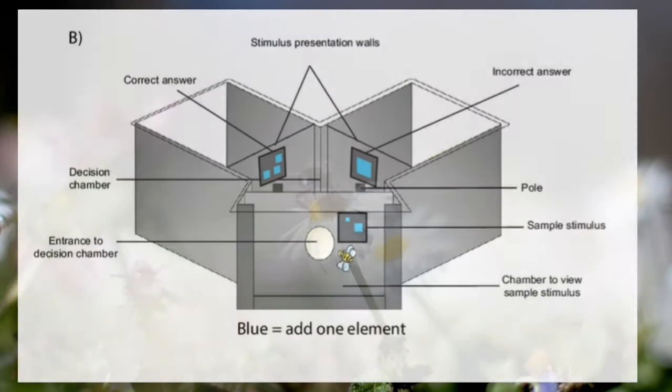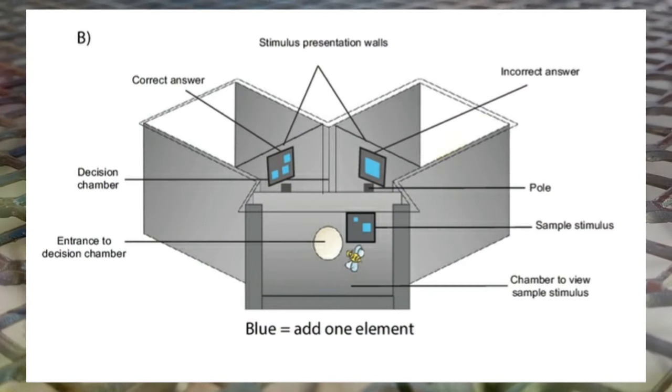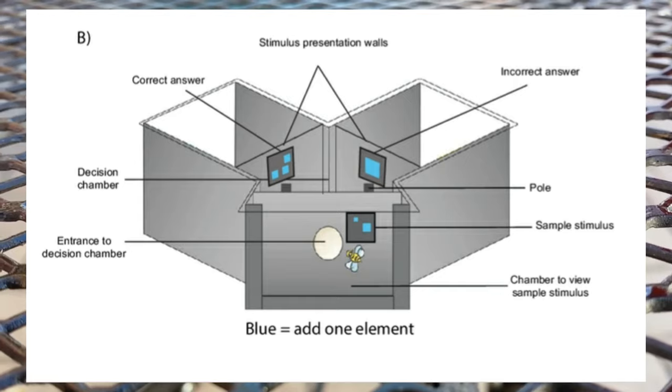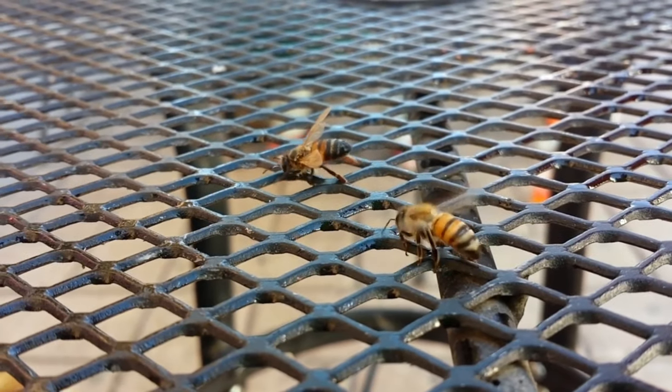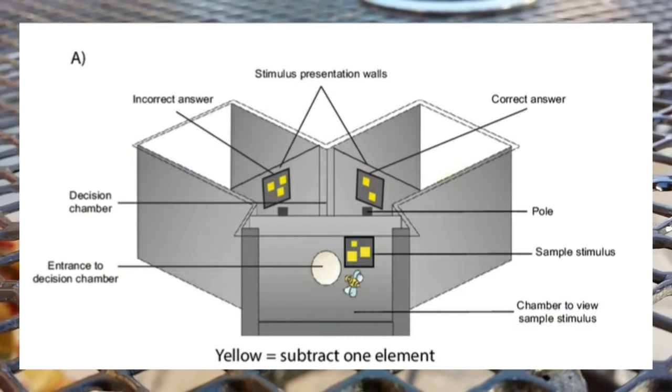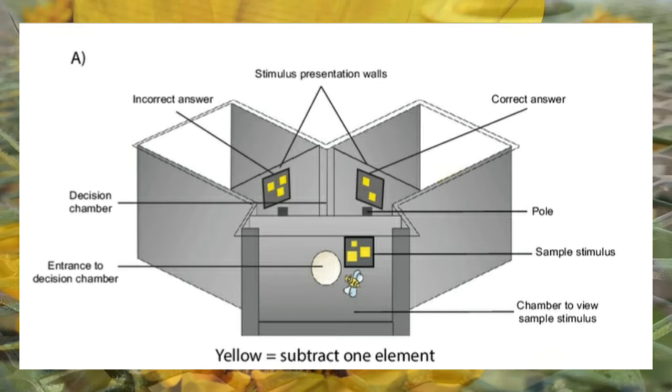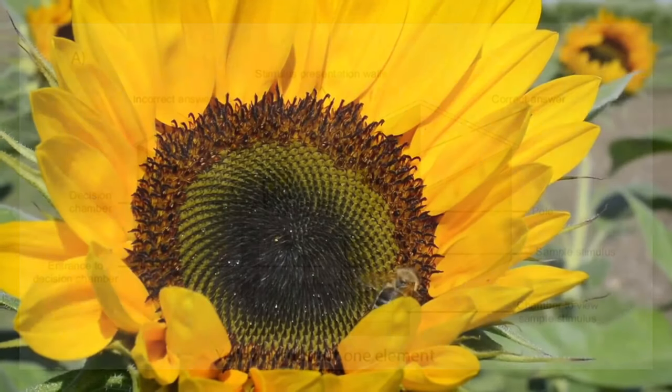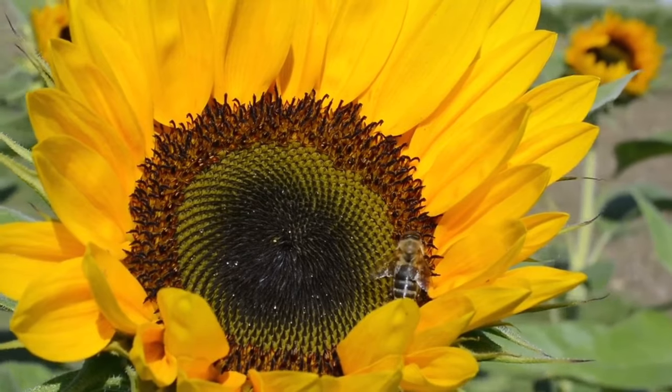If the elements were blue, the bees would need to choose the stimulus option in the decision chamber which was one element greater than the sample. However, if the elements were yellow, the bees would need to choose the stimulus which contained one less element than the sample number.